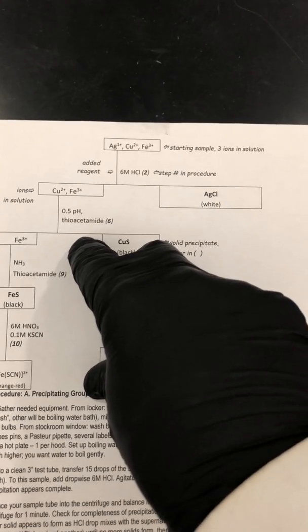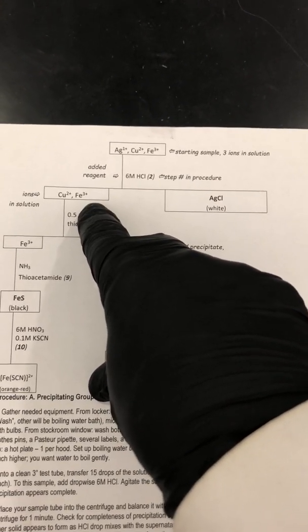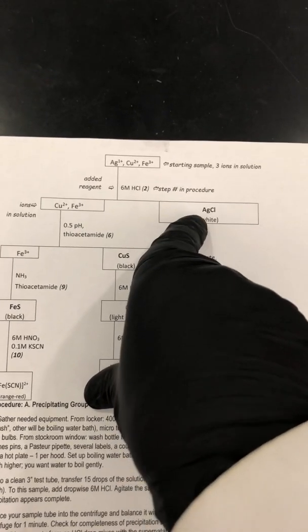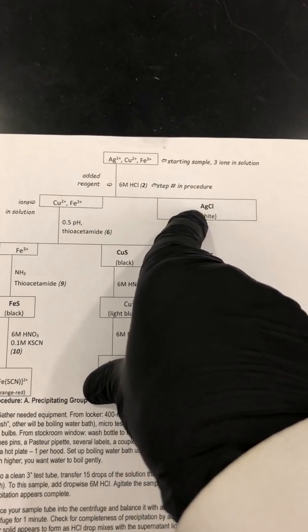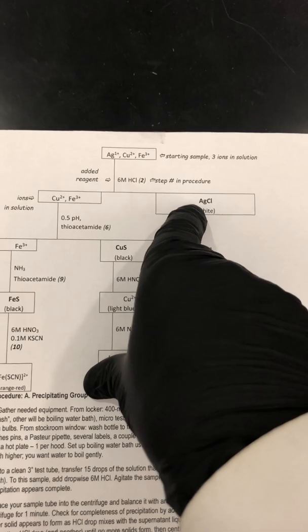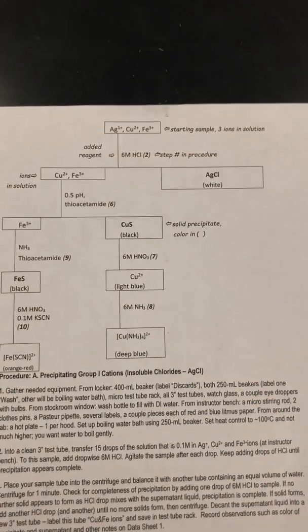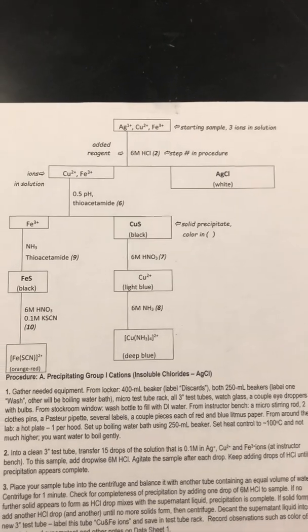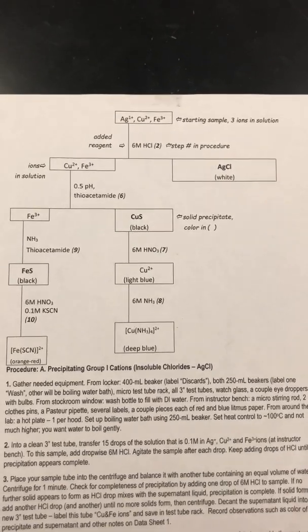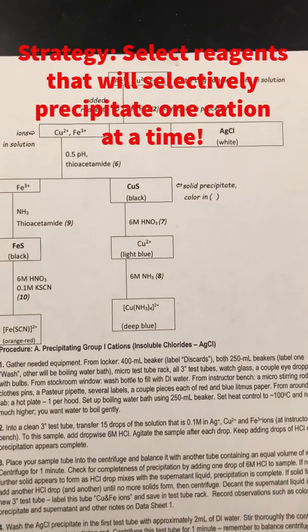Think about the strategy — why didn't we use the sulfide first? Because if we had used sulfide first, the silver ions would have also precipitated as silver sulfide, and that wouldn't have helped us. So the key of this strategy is to select chemical reagents that will sequentially precipitate one cation at a time.